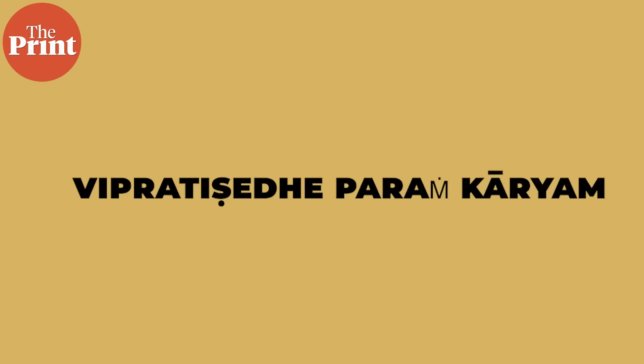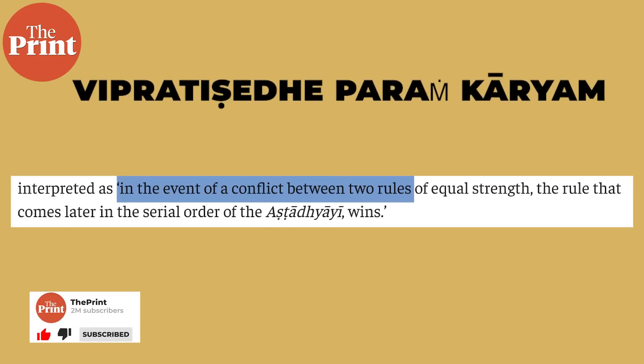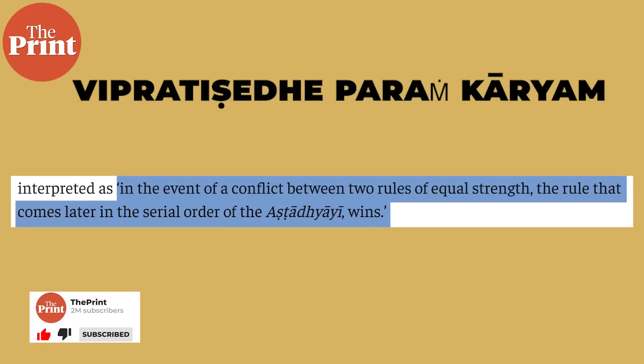This leads to one rule blocking the other, or both blocking each other, and this is called rule conflict. When rule conflicts are encountered, it's difficult to decide which rule to pick. Therefore, Panini himself wrote a meta rule. The meta rule states 'vipratishedhe param karyam,' which traditional scholars have interpreted as: in the event of a conflict between two rules of equal strength, the rule that comes later in the serial order of the Ashtadhyayi wins.